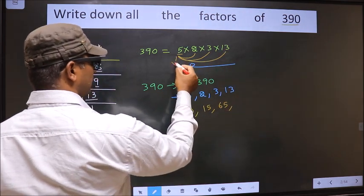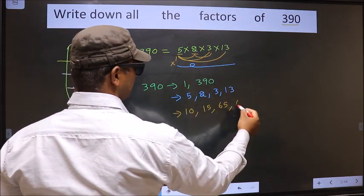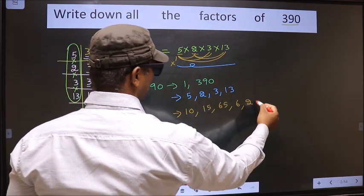Now you leave this 5, fix 2, combine with 3, 6. Now you combine with 13. 2 into 13, 26.